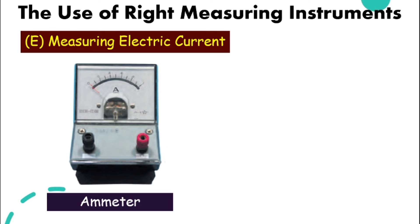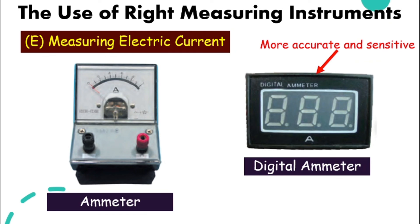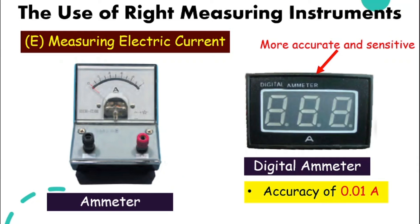How do we measure electric current? We can use an ammeter, and of course a more accurate and sensitive one is the digital ammeter, which has an accuracy of 0.01 ampere.